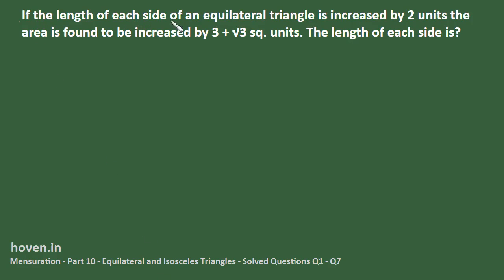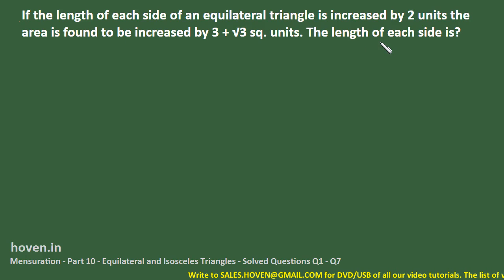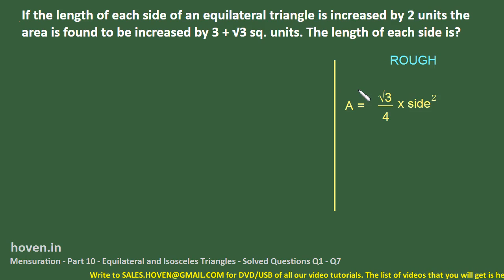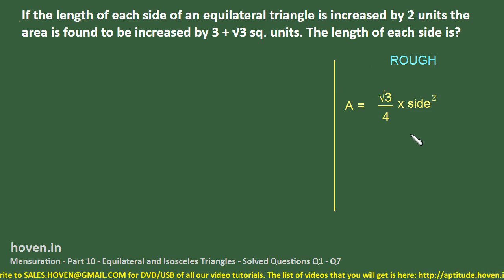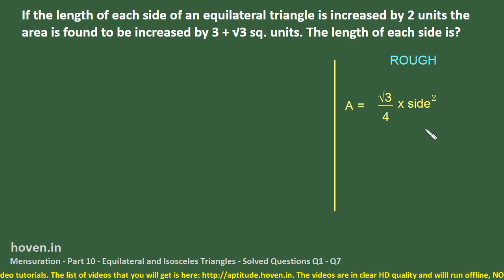If the length of each side of an equilateral triangle is increased by 2 units, the area is found to be increased by 3 plus k root 3 square units. We have to find out the length of the side of that equilateral triangle. We have already derived that the formula for the area of an equilateral triangle in terms of its side is square root of 3 by 4 into the square of the side.